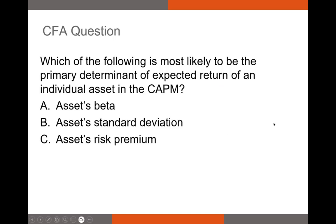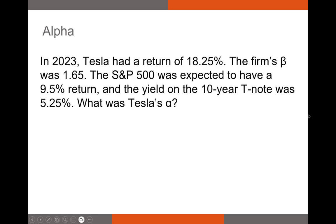Here's a CFA-style question: which of the following is most likely to be the primary determinant of expected return of an individual asset in the CAPM — the asset's beta, the asset's standard deviation, or the asset's risk premium? The correct answer is beta. Different assets will all share the same market risk premium, but every asset will have a different beta, so the higher the beta, the higher the expected return.